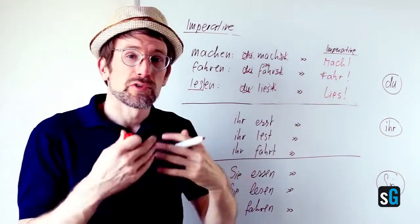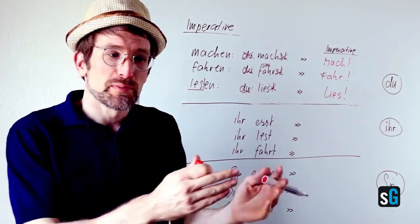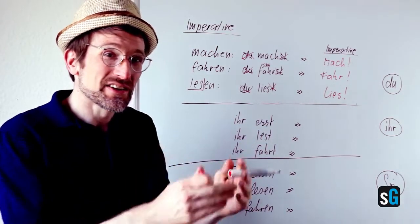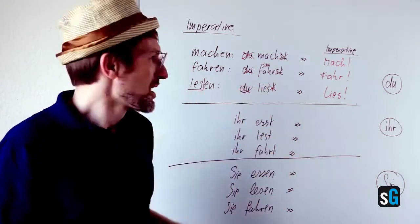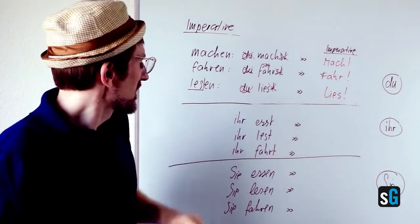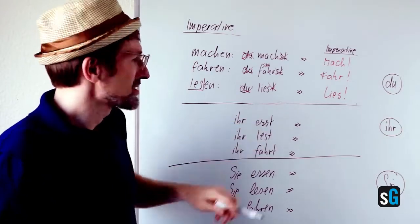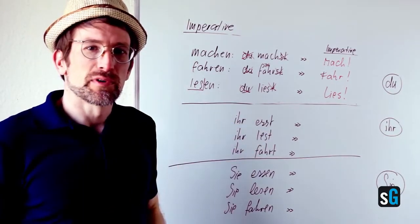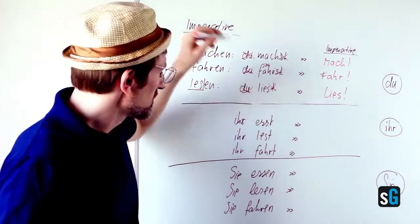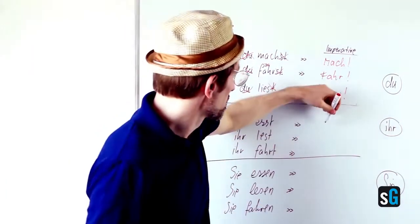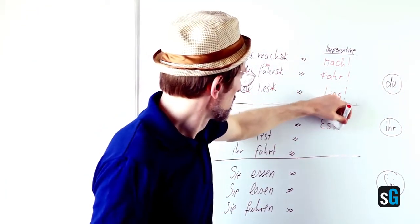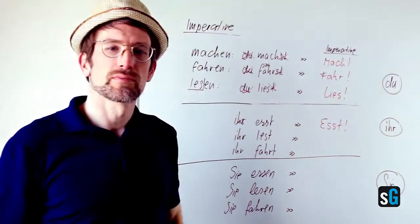Then you could also give orders or instructions to two people that you are informal with. Ihr essen, ihr esst. It's even more simple than the du version. Just eliminate ihr and you have, voila, the imperative.